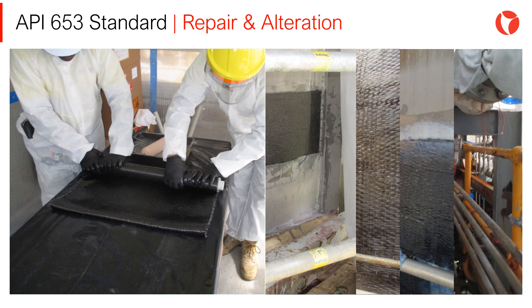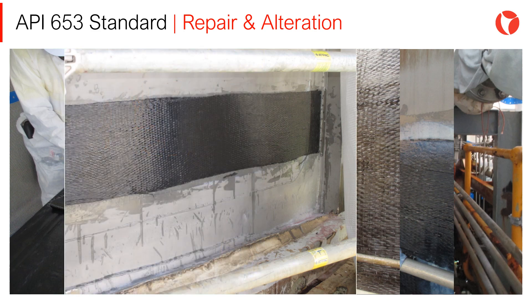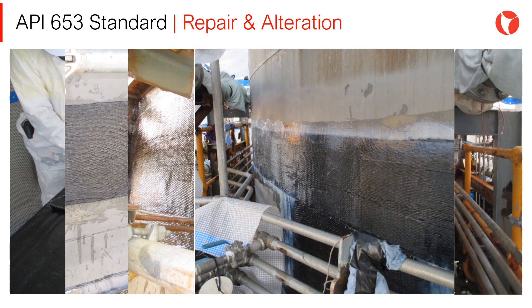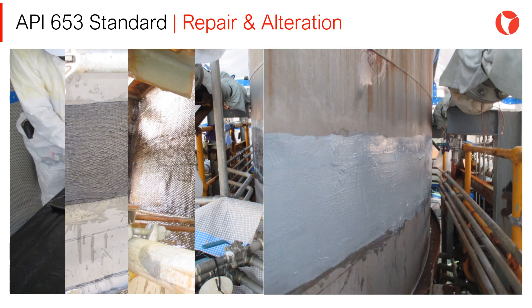An example of a repair using non-metallic materials is shown on the screen. First, the non-metallic or composite material is prepared. Once the composite element is prepared, it is attached and glued to the tank shell by means of epoxy and other resins. Once the composite patch is added to the shell, it is painted and several layers of resins and other gluing materials are added. Finally, it is lined and covered with special paint to ensure that the repair will last as required.